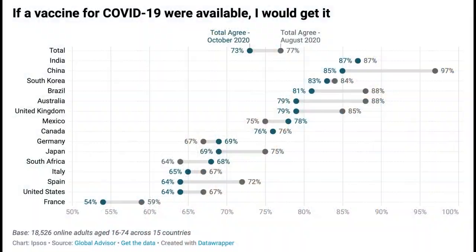Hey folks, my name is Pat Schloss and this is Code Club. Over the past several episodes, we've been taking a barbell chart or dumbbell chart — whatever you want to call it — that was published by an agency called Ipsos describing the acceptance of the COVID-19 vaccine across 15 different countries.